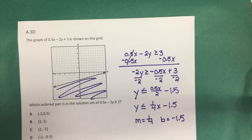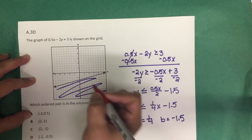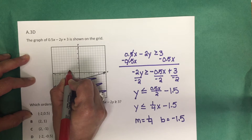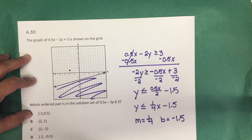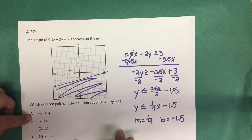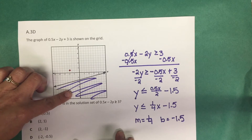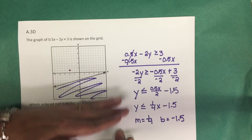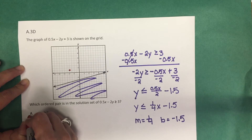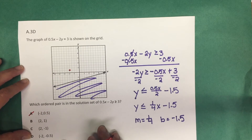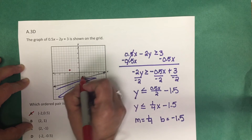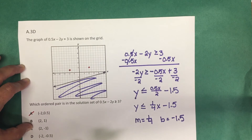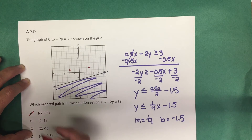Let's check each answer choice. The point negative 2, 0.5 means two units left and up half a unit — that point does not lie in the solution set, so answer choice A is not correct. The point positive 2, positive 1 means two units right and one unit up — that point also does not lie in the solution set.